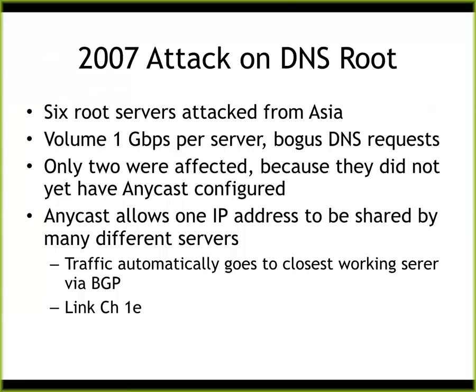Here's a 2007 attack — six root servers were attacked from Asia, but only two were affected. This is because they didn't have anycast. There are four kinds of network traffic on the internet: multicast, anycast, unicast, and broadcast.